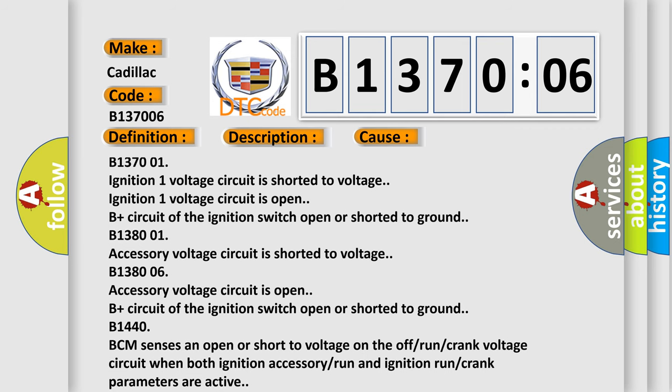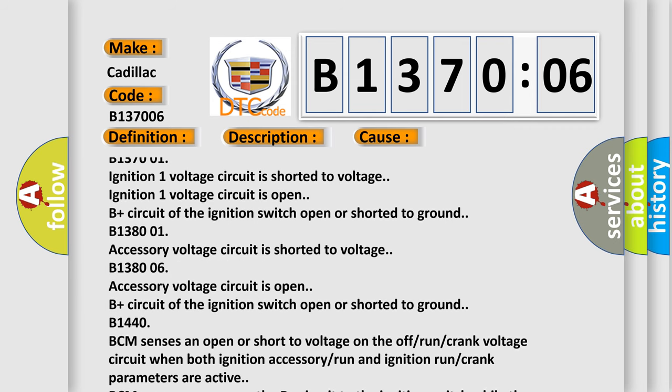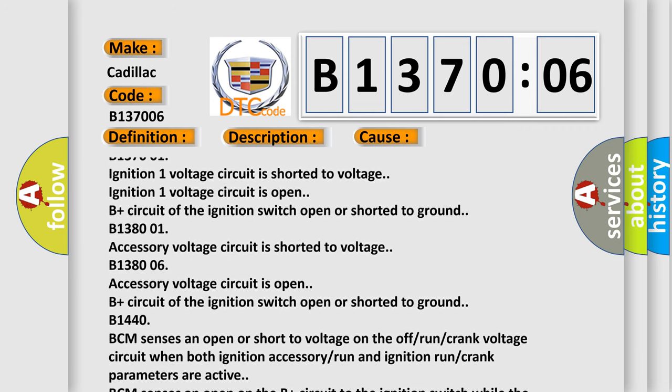Ignition 1 voltage circuit is shorted to voltage. Ignition 1 voltage circuit is open. B+ circuit of the ignition switch open or shorted to ground.